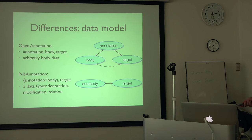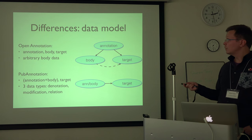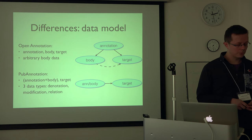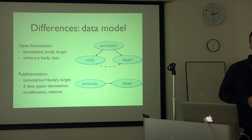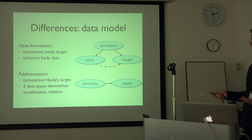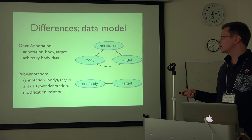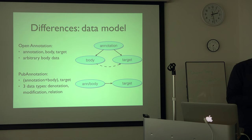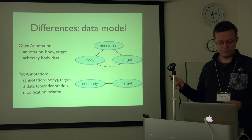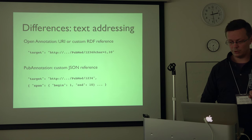Pub annotation adopts a simpler model where what would be in open annotation the annotation and the body are unified, and the reference to the target is directly from this. Similarly, the open annotation body is basically any RDF — a pretty much arbitrary data structure — which is both a plus and a minus: it's very generic but very difficult to support everything. Pub annotation supports three data types: annotation, basically a labeled span of text; modification, like a unary attribute; and relation, a binary labeled attribute.